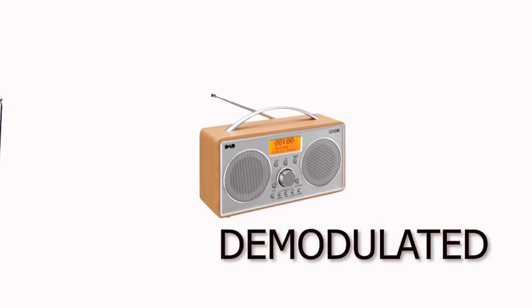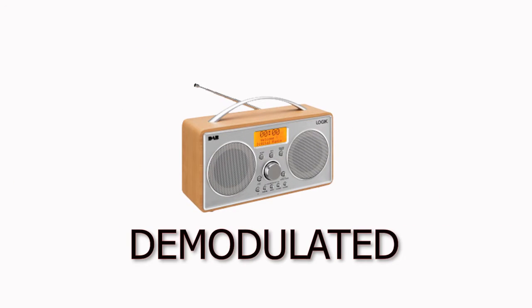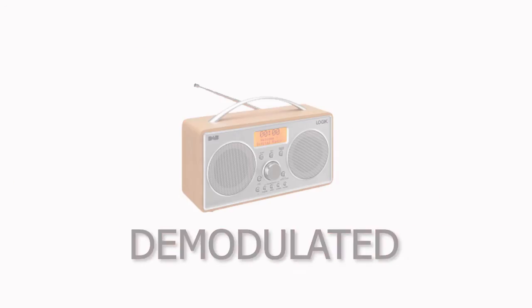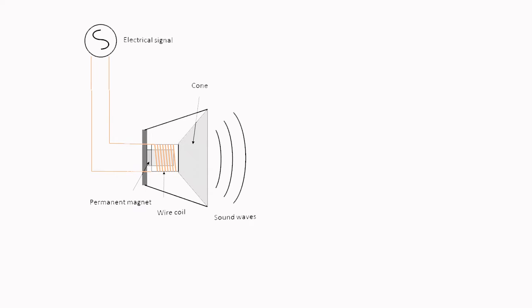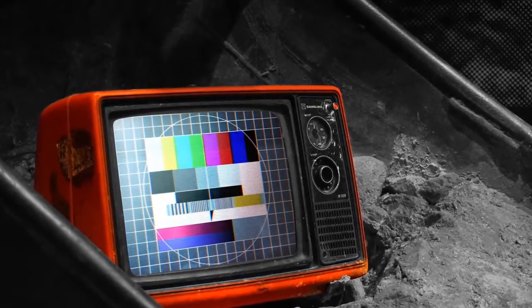If your radio is tuned to that particular frequency, the signal is received and demodulated, converting it back to electrical energy, where it is then sent to your speakers, which vibrate identically as it was when it was captured by the radio announcer's microphone.